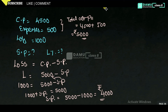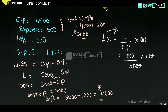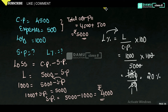Now let us find loss percentage. Loss percentage equals loss divided by cost price, into 100. Loss is 1000, cost price is 5000, into 100. Two zeros cancel, giving 1000 by 50. Then we get 5 goes into 10 twice, so loss percentage equals 20%.